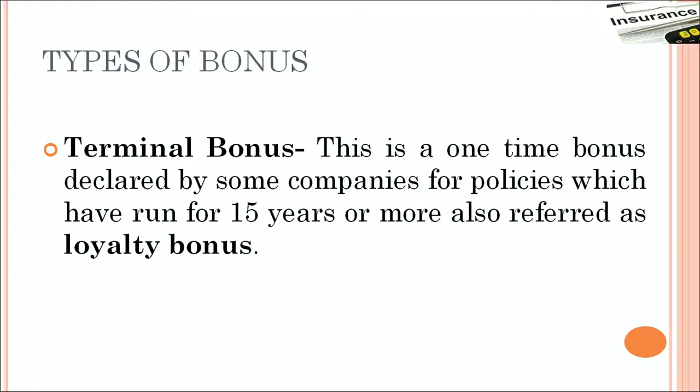Generally bonus is paid on the 31st of March every year, but if there is a plan maturing say in September, then the bonus accruing from April to September will be paid interim. This is somewhere midway between the evaluation dates, and that is why it is called interim bonus. Then you have terminal bonus — it is a one-time bonus declared by companies for policies which have run for 15 years or more. It is kind of a loyalty bonus for being with the company for so long, appreciating this long-term relationship.